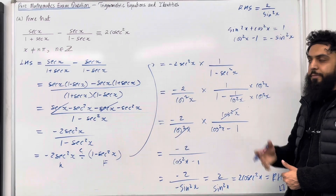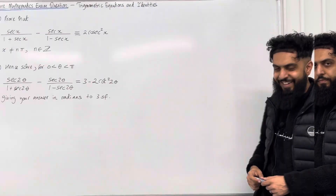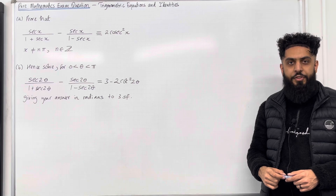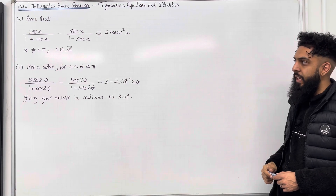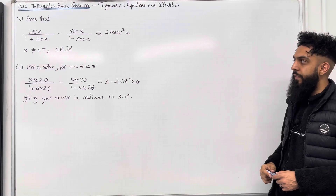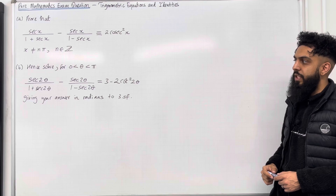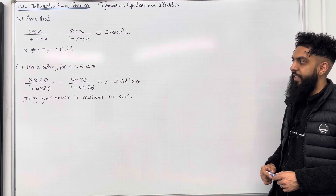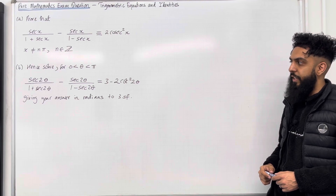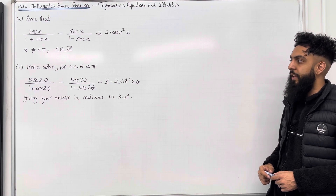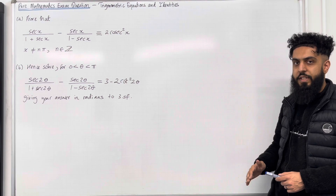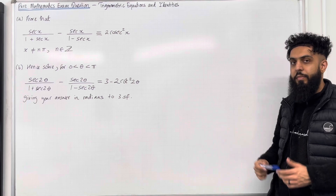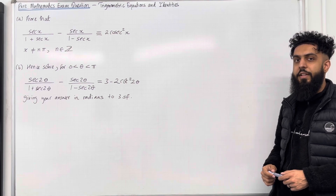Moving on to part B of the exam question. 'Hence' means I refer back to my answer in part A. Solve for theta between 0 and π: sec 2θ over 1 plus sec 2θ, minus sec 2θ over 1 minus sec 2θ, equals 3 minus 2 cos squared 2θ. Give your answer in radians to 3 significant figures. Please pause the video and have a go at part B. Once you've got your complete solution, then play the video.